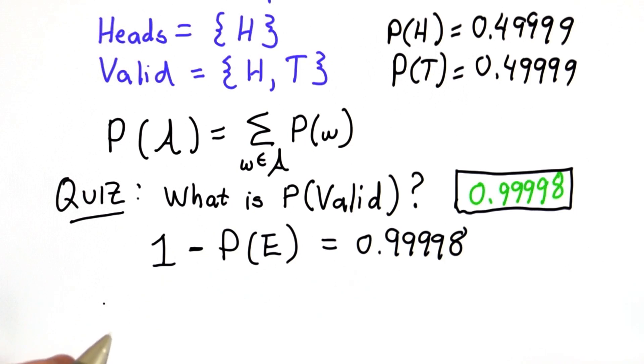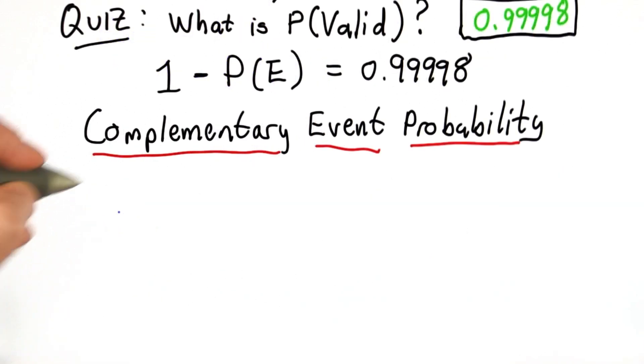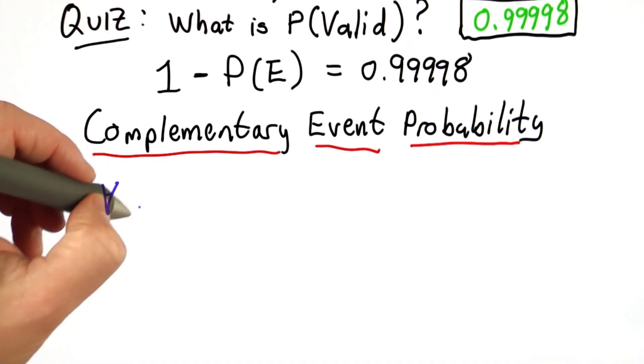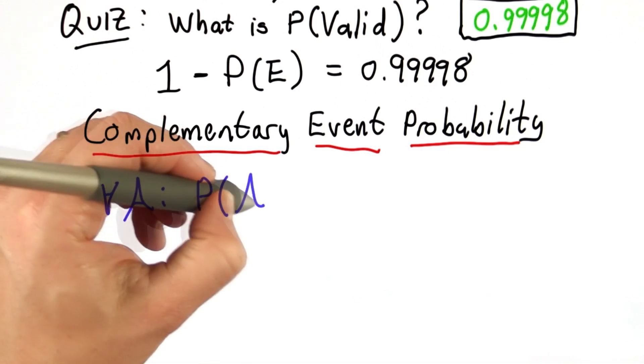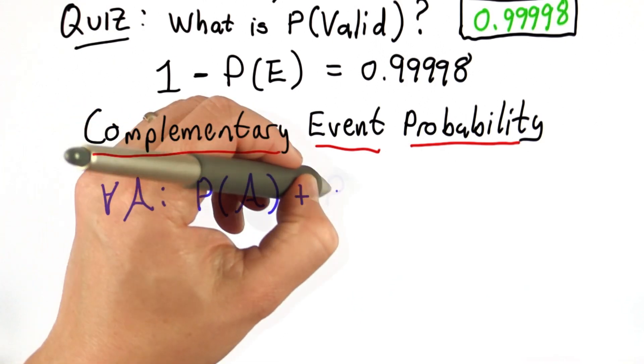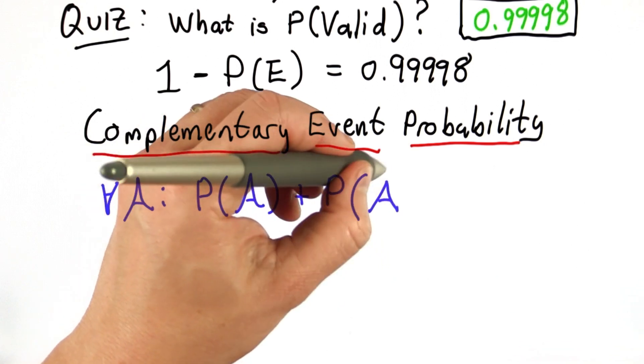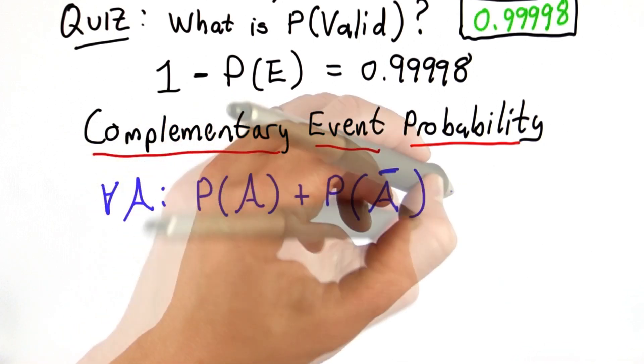The property that we're using to do this is the complementary event property. What it states is that for any event A, the probability of that event and the probability of the complement of that event, that is of that event not happening, is equal to 1.